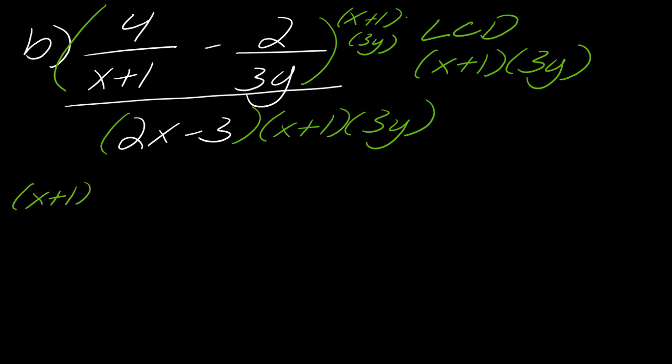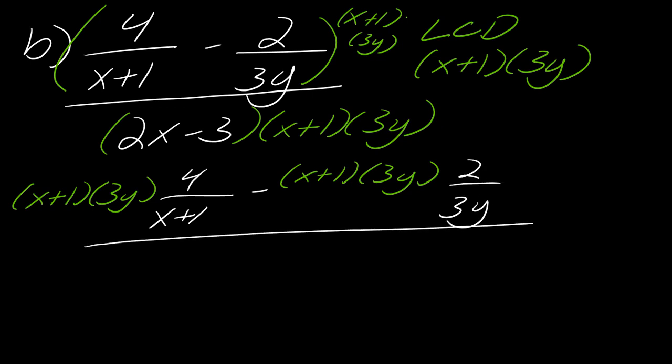Now what will end up happening with this? So if I set all of this up in just excruciating detail, I've got this minus x plus one, three y, and then two over three y, and then in the bottom I'm going to call this three y times x plus one times two x minus three. Basically the whole point of this is to cancel out the denominators. So these x plus ones will drop out, and then these three y's will drop out.